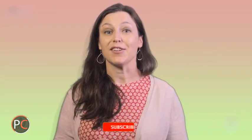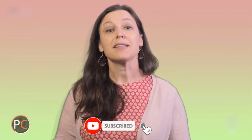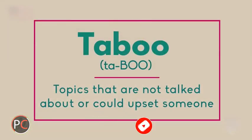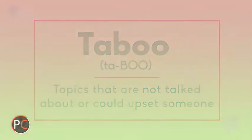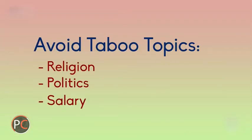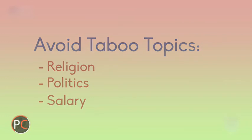In the U.S., we usually stay clear of certain topics — topics that we consider taboo or controversial, topics that could upset someone. Some examples of taboos in the U.S. are religion, politics, and salary. It's best to avoid discussing these topics in a conversation, especially with someone you're trying to make a good impression with.